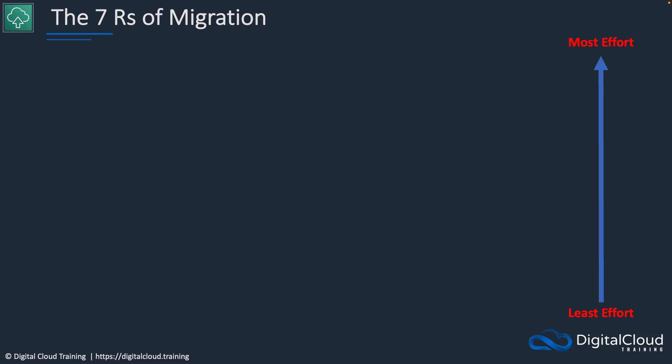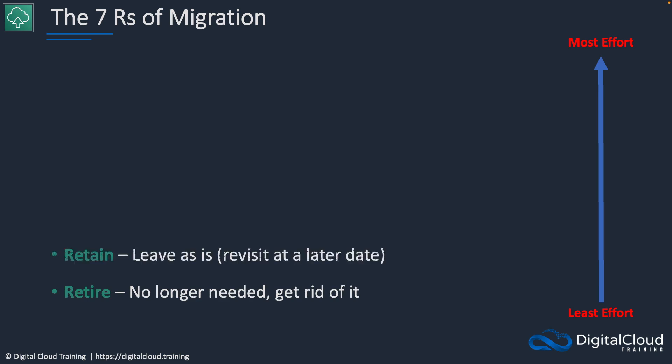Let's say you've decided to close down your on-premises data center, or you want to migrate as much as you can into AWS. What are you going to do with each application? Firstly, you might retire — you identify some applications you don't need anymore and just get rid of them. The second R is to retain, meaning leave as is.